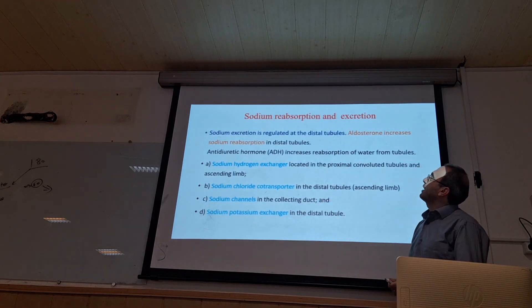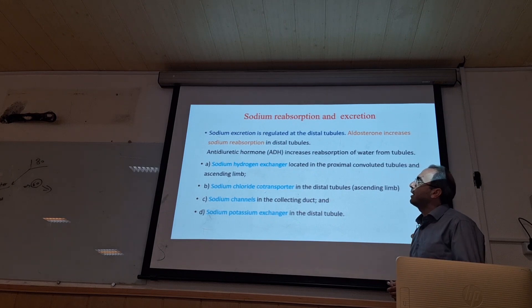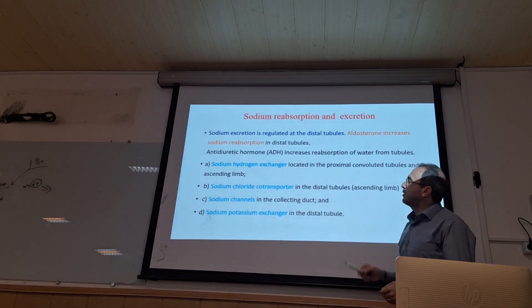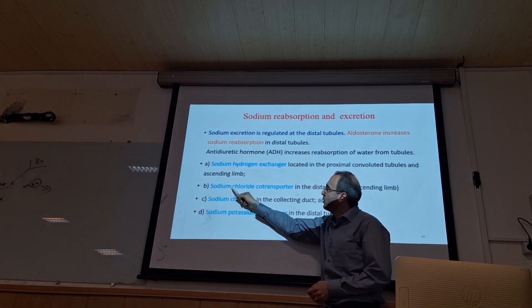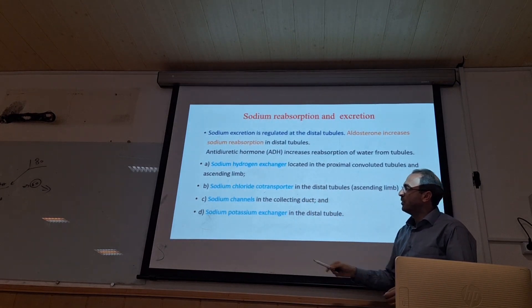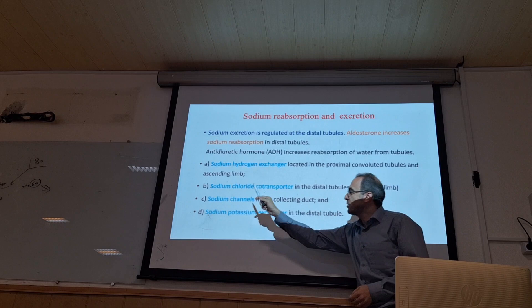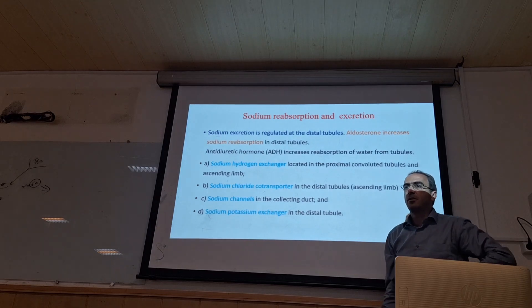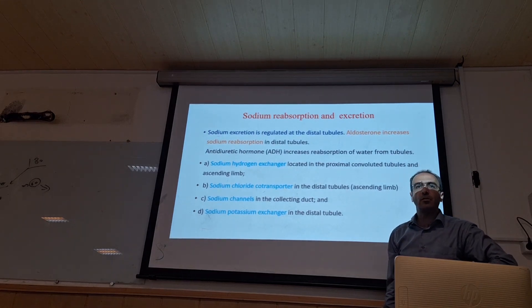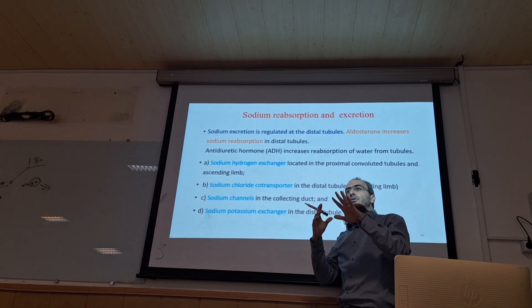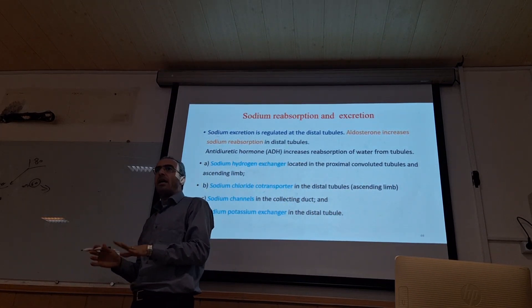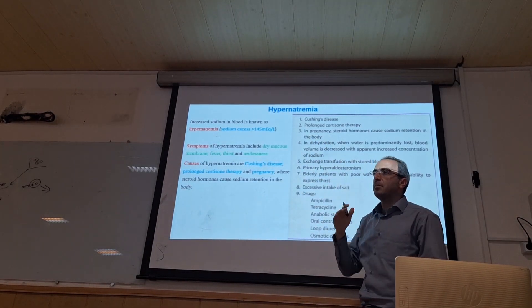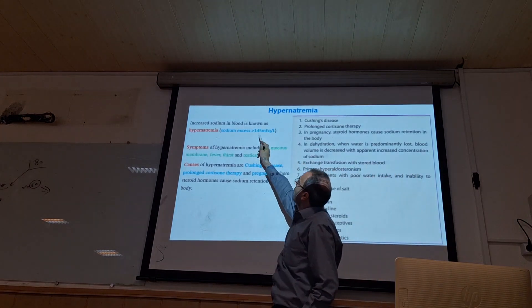We have some pumps and channels for sodium reabsorption and excretion. The sodium-hydrogen exchanger is located in the proximal tubule and ascending segment. The sodium-chloride co-transporter is in the distal tubule. The sodium channel is in the collecting duct, and the sodium-potassium exchanger is in the distal tubule. By these channels, we can regulate the sodium amount. We have two different situations: hyponatremia and hypernatremia. When we say hypernatremia, it means the sodium amount is increased above 145.